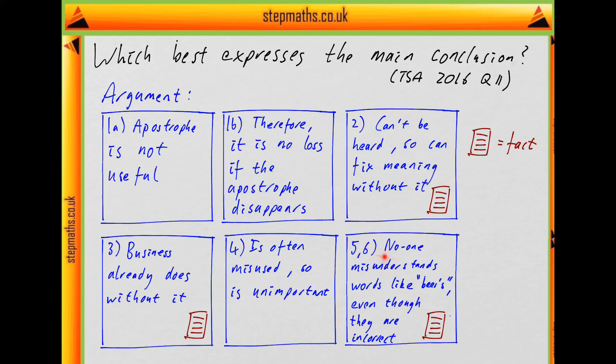They say many people put it in any word ending with an S, for instance, beers or wines or spirits. But nobody fails to get the message. We understand words like beers, even though they're an incorrect use of apostrophes. This is another factual statement just describing how people act.